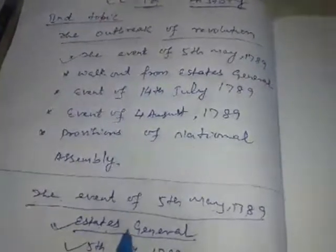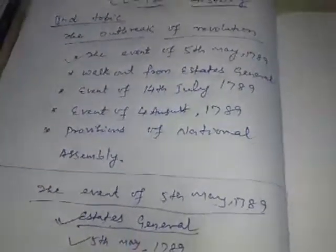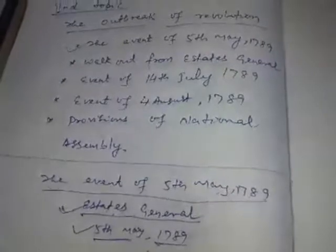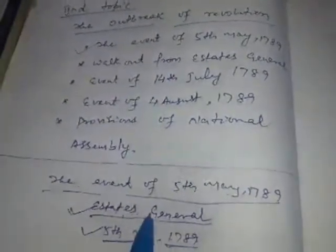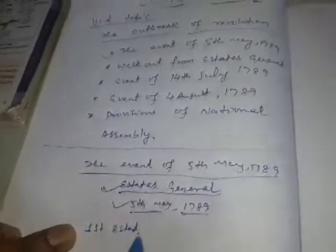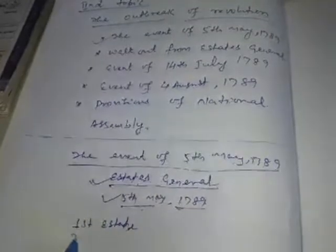On 5th May 1789, Louis XVI called a meeting of the Estates General. All the representatives from the First Estate, Second Estate, and Third Estate assembled in the meeting.